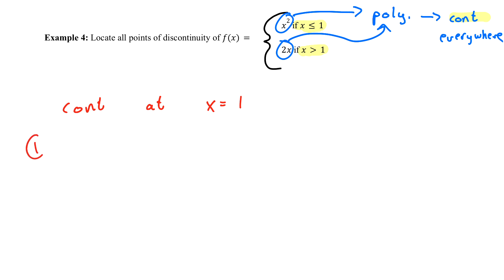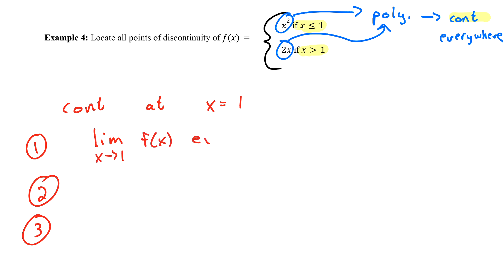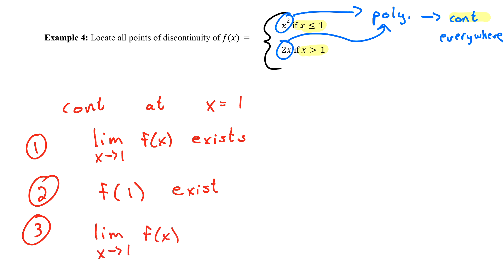For continuity at a point — specifically at x equals 1 — we need three things: first, the limit as x approaches 1 of f(x) must exist; second, f(1) must exist; and third, those two things must be equal — the limit as x approaches 1 of f(x) must equal f(1). We can treat this like a checklist.